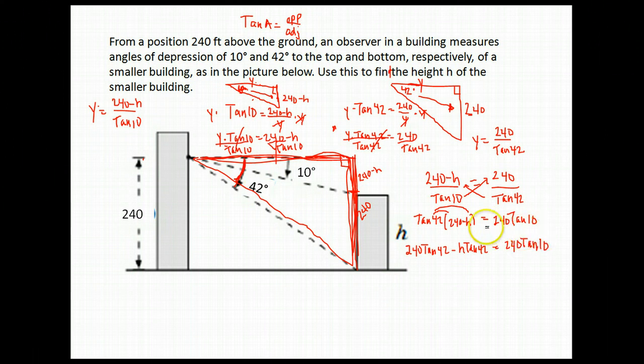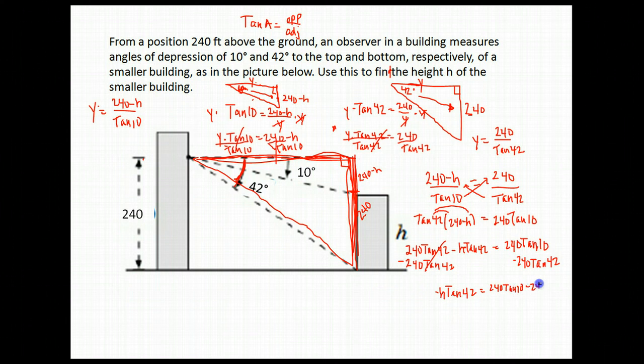This is basic algebra, but with all of these new things in it, it makes it more complicated. We're trying to get h by itself. I need to remove this 240 tangent of 42, so I'll subtract it from both sides. I have negative h tangent of 42 equals 240 tangent 10 minus 240 tangent 42. I'm going to divide by the negative tangent 42 on both sides and that is my answer.